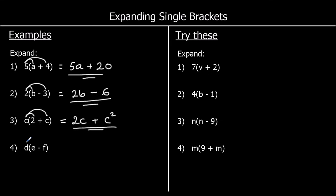And the fourth one: we've got d times e, which we just write as de — that means d times e. Try to put the letters in alphabetical order, so d comes before e. And we've got d times negative f, which is going to be negative, and d times f is just df.